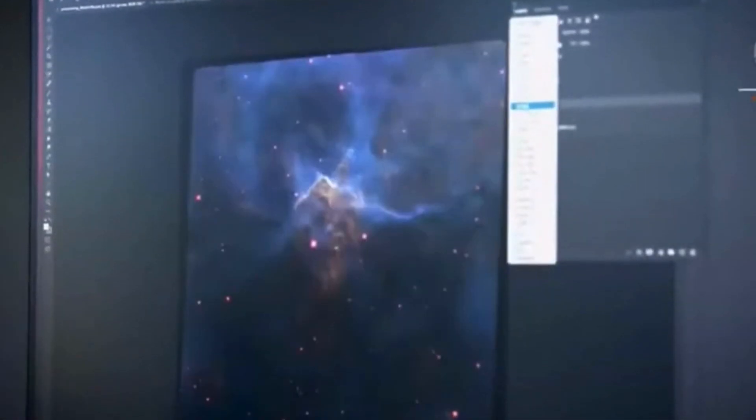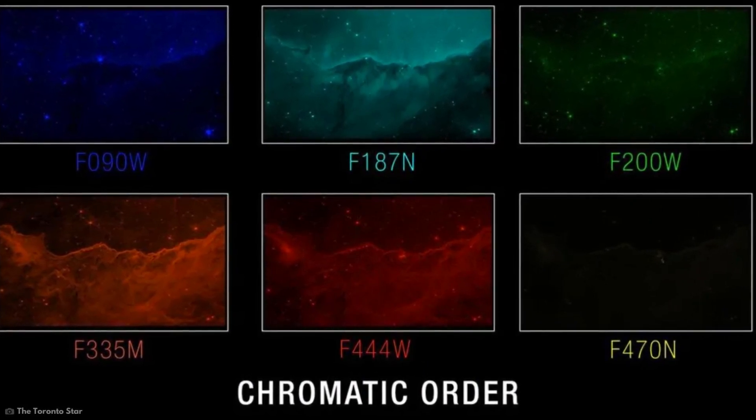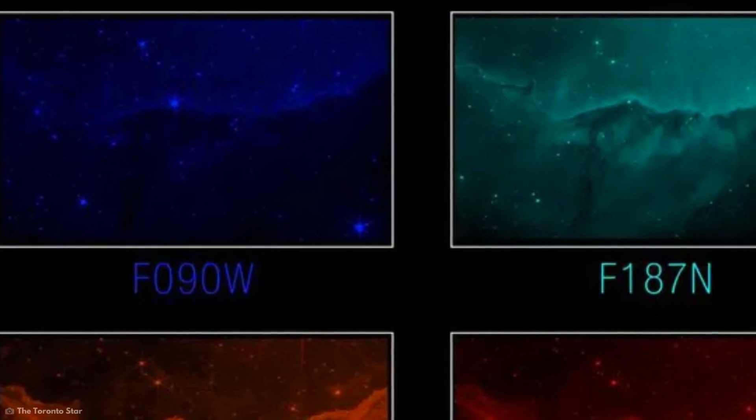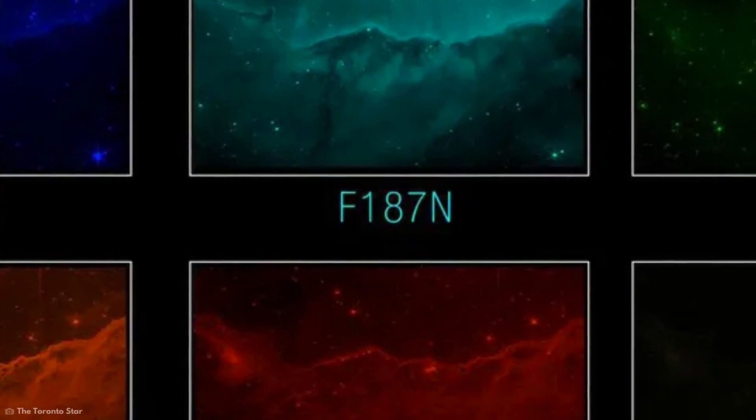They then assign a color to each infrared filter. These colors correspond to the visible range of the spectrum. The shortest wavelengths are assigned blue. Longer wavelengths are assigned red and green.